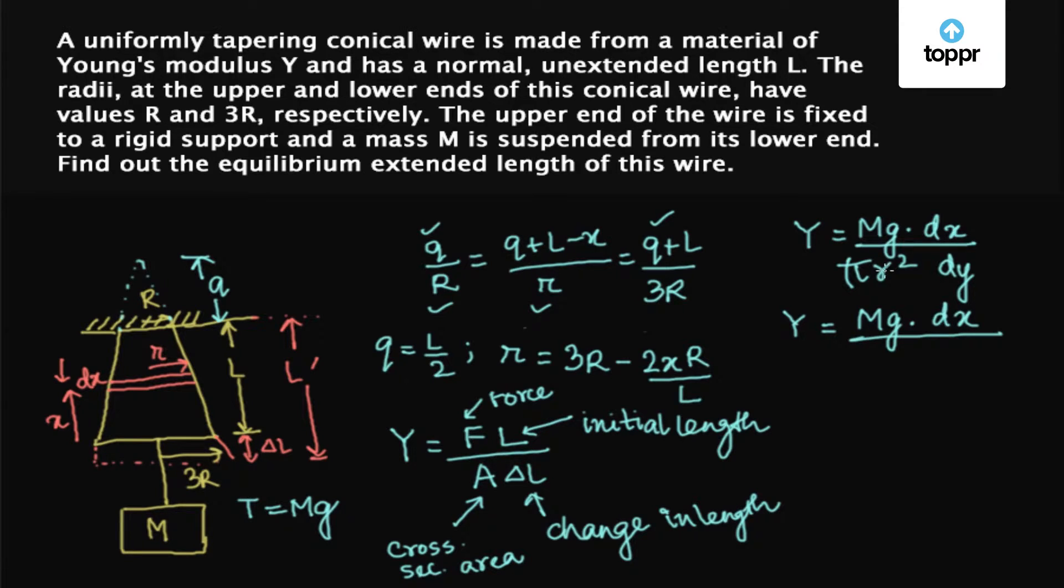We substitute the value of small r which is 3R minus 2X R upon L whole square into π into DY.